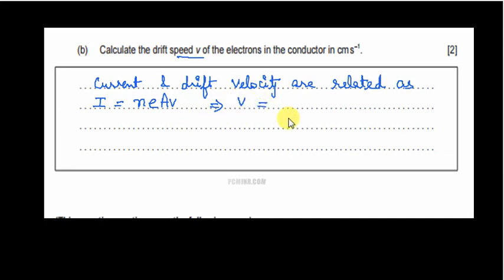So I upon n e A. That means we have V, the drift velocity as I is given to be 2 ampere in the question, the ammeter reading is 2 ampere upon n.